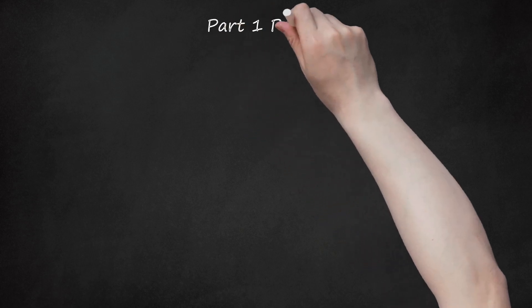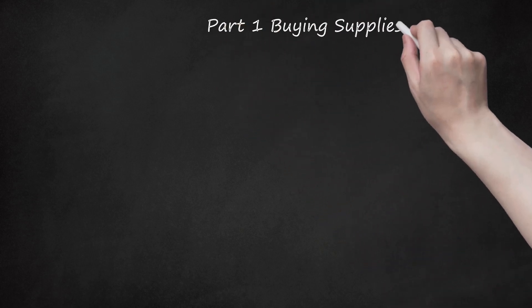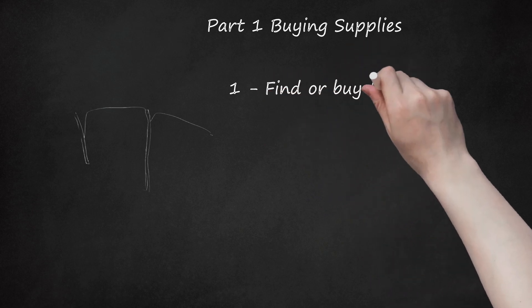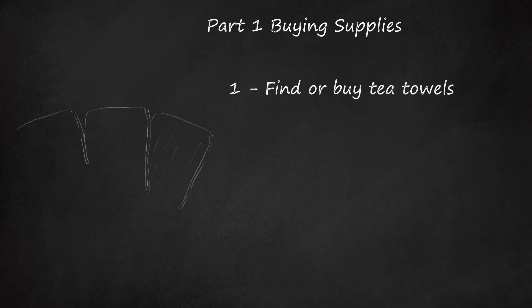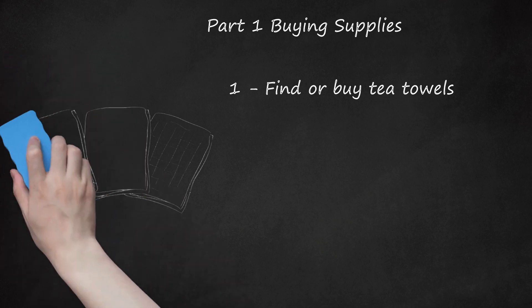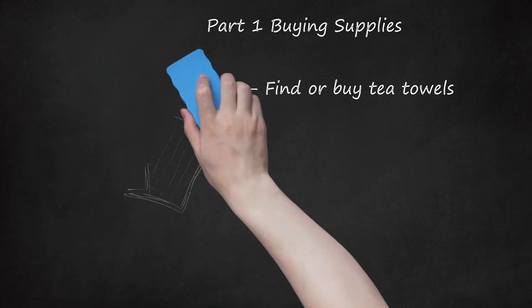Part 1: Buying Supplies. Step 1: Find or buy tea towels. Vintage designs are available at second-hand shops, while hand-painted versions are popular at farmer's markets. You can also find them at large box stores or hidden in your own linen closet.